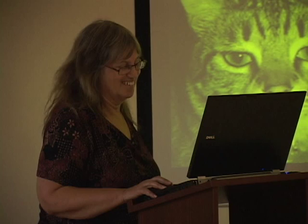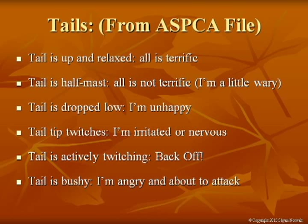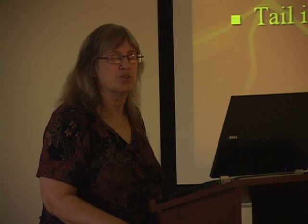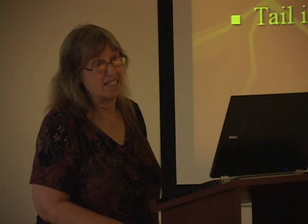Tails tell a lot. The tail is up and relaxed — all is terrific. You've all seen the greeting tail, which is up high with a little curve — it's called the family or clan greeting. Tail at half-mast — all is not terrific. Tail dropped — I'm unhappy. Tail twitches — irritated or nervous. Tail actively twitching — back off. You'd be surprised at the number of people who think that when a tail is wagging in a cat it's like a tail wagging in a dog — and they don't understand why they get injured when they pet that wagging-tailed cat.